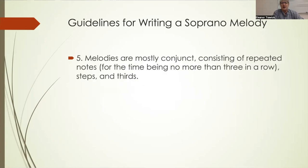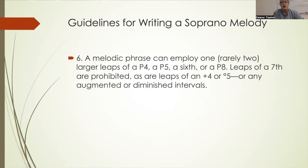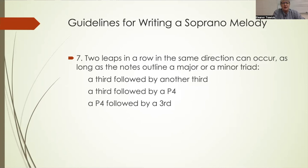Melodies are mostly conjunct — they consist of repeated notes, although there should be no more than three repeated notes in a row, also steps and thirds. A melodic phrase can employ one or rarely two larger leaps of a perfect fourth, a perfect fifth, a sixth, or a perfect octave. Leaps of a seventh are prohibited, and leaps of an augmented fourth or diminished fifth are not allowed. No augmented or diminished intervals are allowed in the soprano line. Two leaps in a row in the same direction can occur as long as the notes outline a major or a minor triad.